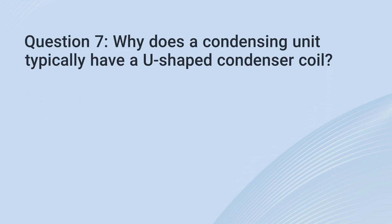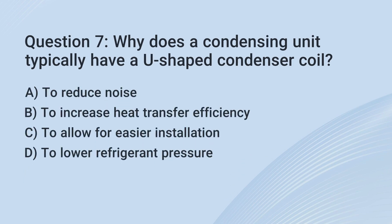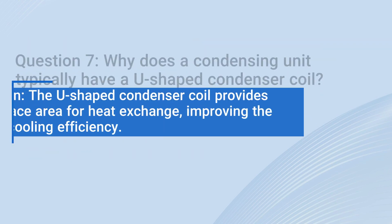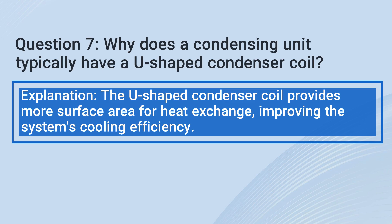Question 7: Why does a condensing unit typically have a U-shaped condenser coil? a. To reduce noise. b. To increase heat transfer efficiency. c. To allow for easier installation. d. To lower refrigerant pressure. The correct answer is b: To increase heat transfer efficiency. Explanation: The U-shaped condenser coil provides more surface area for heat exchange, improving the system's cooling efficiency.